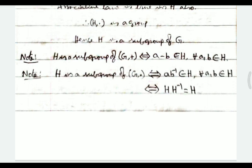Note: H is a subgroup of G with operation plus if and only if a minus b belongs to H for all a, b belonging to H. Also, H is a subgroup of G with dot if and only if a, b inverse belongs to H for all a, b in H, which is equivalent to HH inverse equals H.